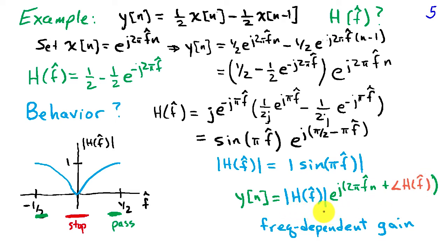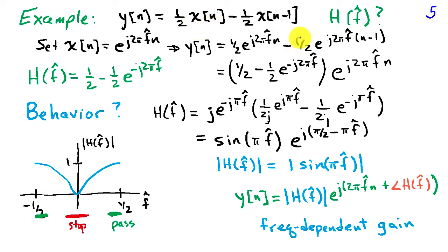The magnitude of H of f-hat is zero near f-hat equals zero, since sine is zero at zero, and rises to one near plus and minus one-half, since sine of plus or minus pi over 2 equals plus or minus one. So for low-frequency inputs, the system attenuates the sinusoid, while for high-frequency inputs near one-half, it gives unit gain. This is intuitively reasonable: if the signal is nearly constant between samples (low frequency), taking the difference gives nearly zero. If the signal alternates sign between samples — corresponding to frequency one-half — the difference gives a gain of one.